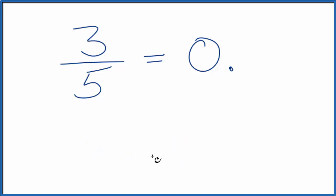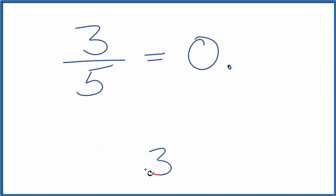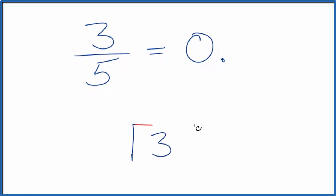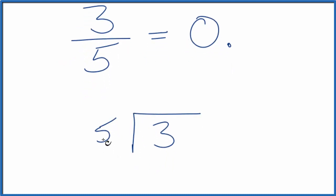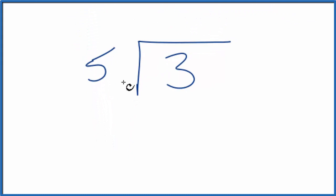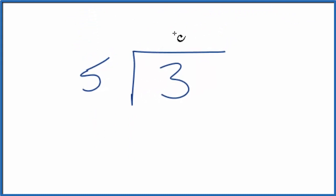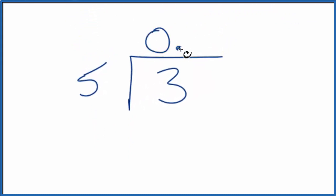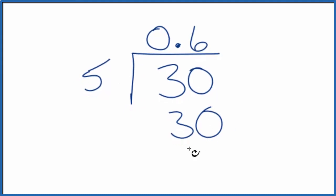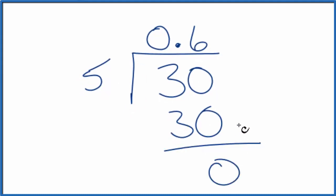We could do it on a calculator, or we could say we have three and then put five here. Five doesn't go into three — it's larger than three. That's why we have zero point something. So we put zero point, and then we could call this 30. Now six times five gives us 30, so this gives us zero here. So 0.6.